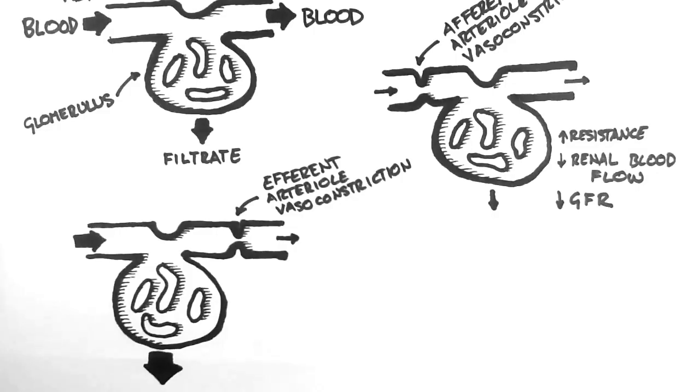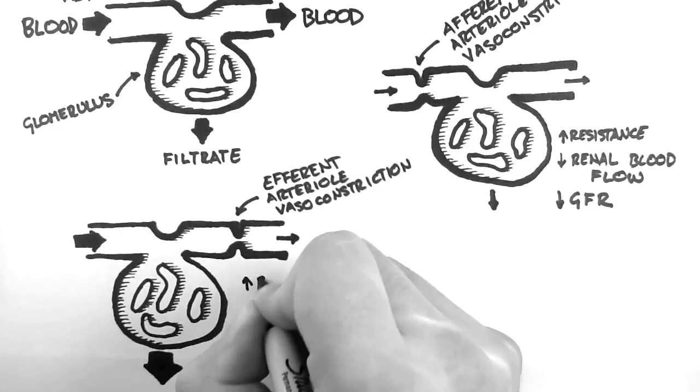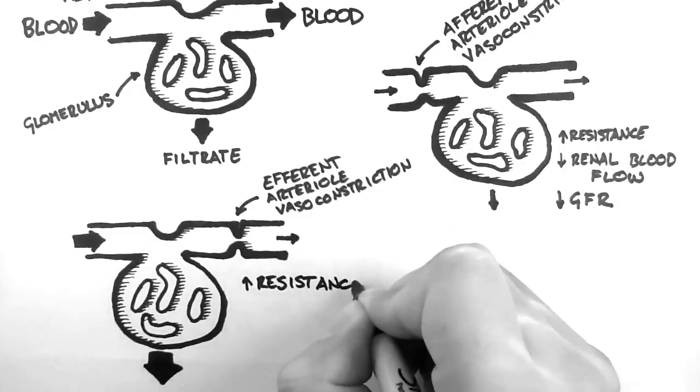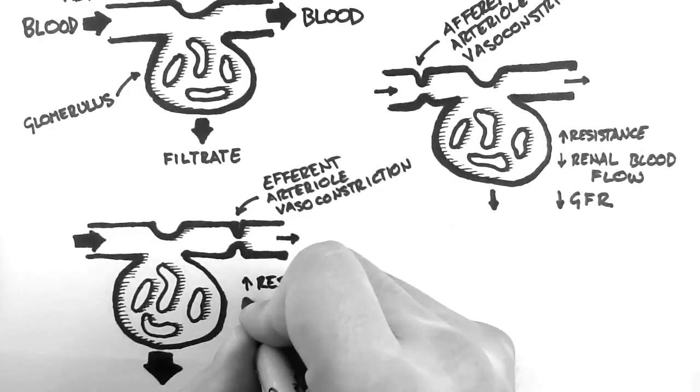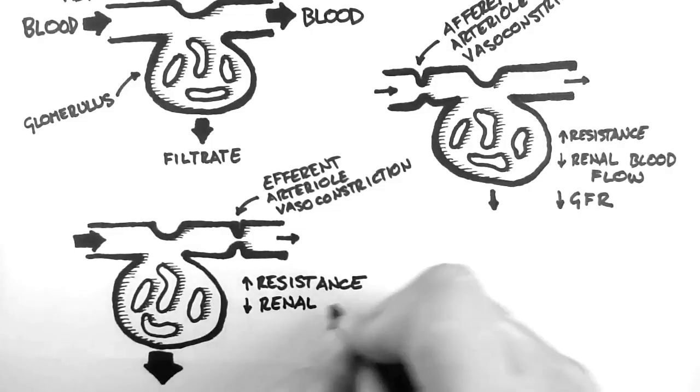Now just one thing that can be a little confusing. Because there is efferent arteriole constriction, there is still increased resistance to blood flow. This means that there will be reduced renal blood flow.